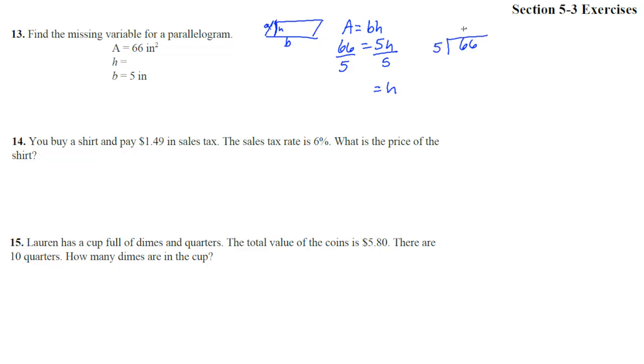5 goes into 66. 5 goes into 6 one time. That's 5. Subtract and we get a 1. Drop the 6 down. 5 goes into 16 three times. 3 times 5 is 15. Subtract and we get a 1. Let's put a 0 there. Drop a 0 down. And we get 13. 5 goes into 10 two times evenly. So we're going to have 13.2.